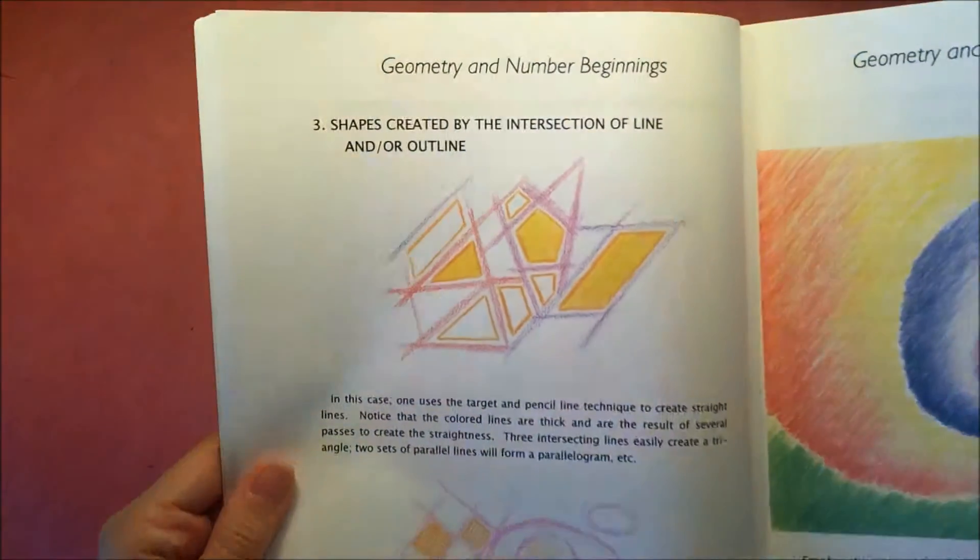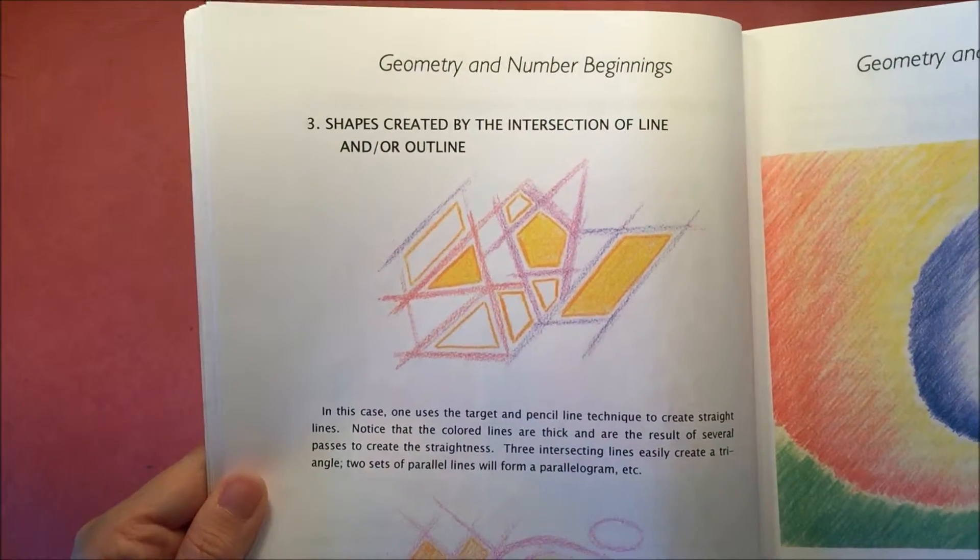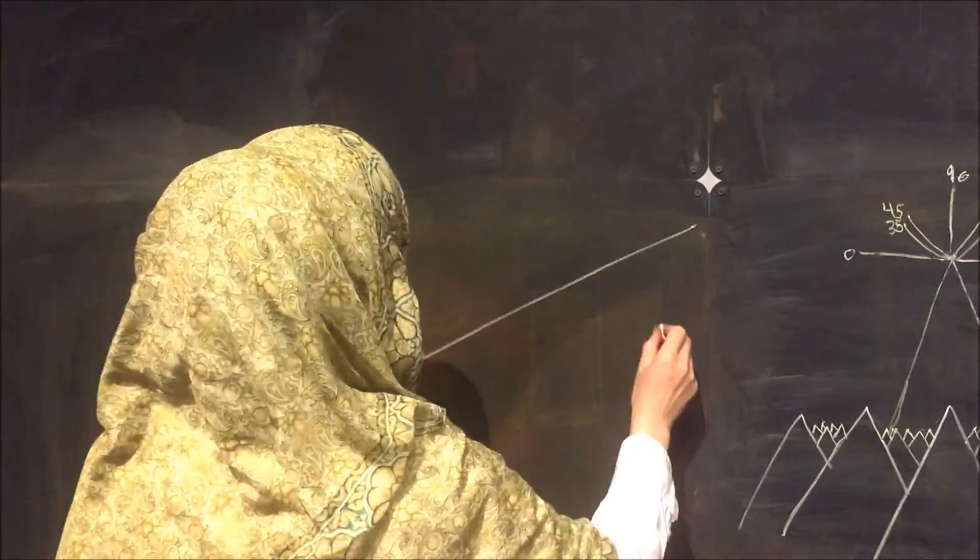And then the last part of this lesson was to make shapes within intersecting lines. And so I just need to erase the board.